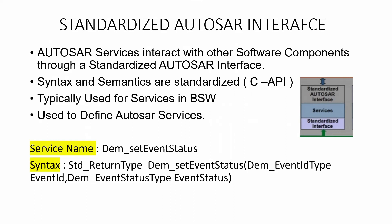Standardized AUTOSAR interface is mainly used in the system services. As the name mentions, these interface names can't be changed by anyone. For example, DEM_SetEventStatus — this is a common interface name described in the AUTOSAR standard and can be called via RTE from the application. Based on the arguments, everything will be fixed. That is why it is called a standardized AUTOSAR interface, and it is typically used for services in base software.